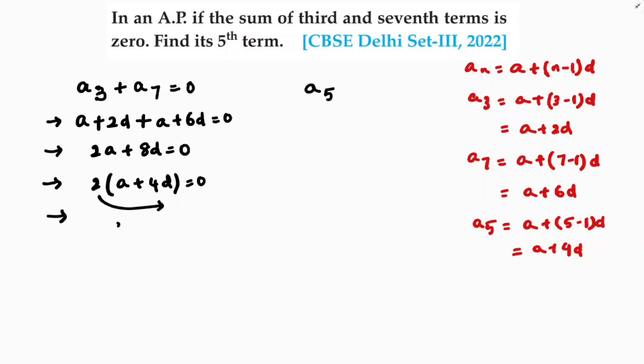If we'll transpose, a plus 4d equals 0 upon 2. 0 by 2 is 0. So a plus 4d value is 0. This is equation 1.